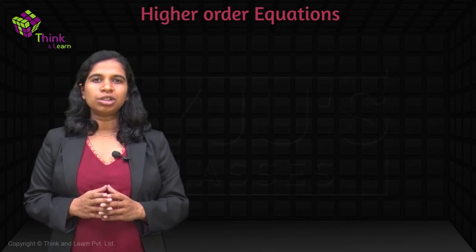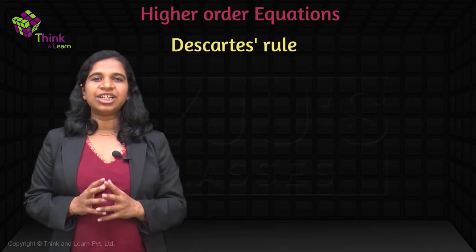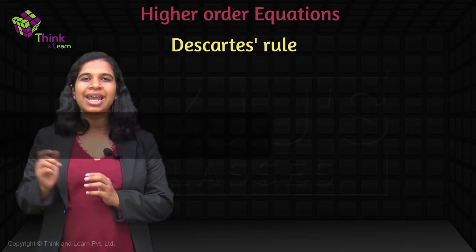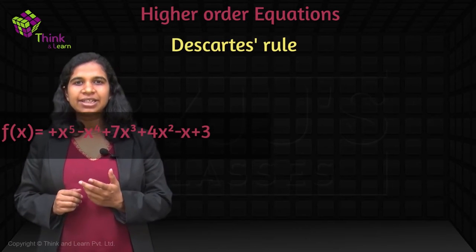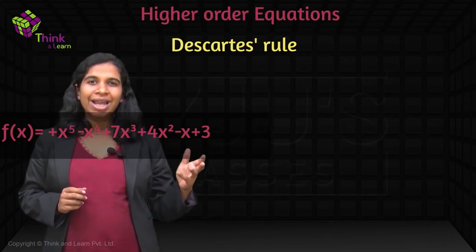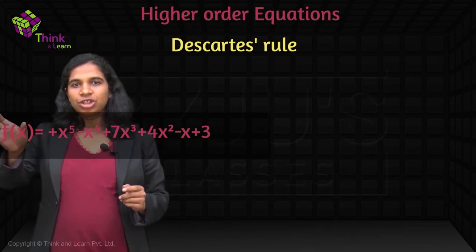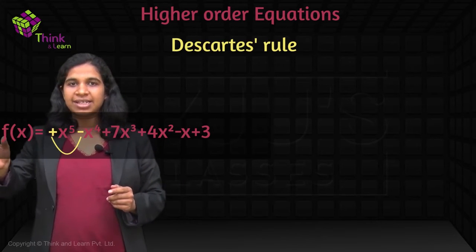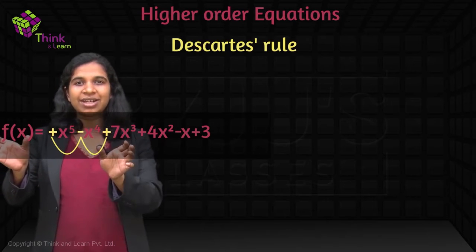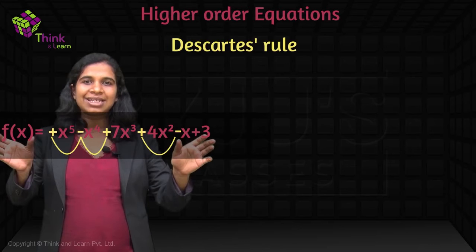This rule was developed by Descartes — it's called Descartes' Rule. You basically need to see the sign changes in an equation. Let's take a fifth order equation: X raised to 5 minus X raised to 4 plus 4X cubed plus 7X squared minus X plus 3. Write it as plus X raised to 5, then minus X raised to 4, then plus 7X cubed, plus 4X squared, minus X, and plus 3.